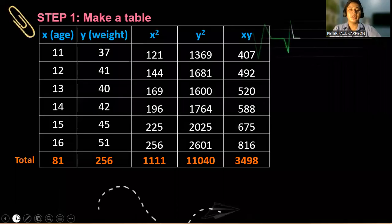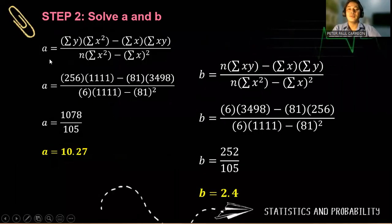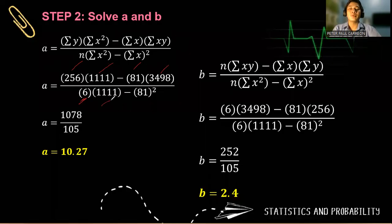After doing the table, then you can solve for a and b. So to solve for a, the summation of y is 256, the summation of x squared is 1111, minus the summation of x is 81. The summation of the product xy is 3498, times six which is the number of children, times 1111 minus the square of the summation of x, which is 81 squared. Using your scientific calculators, the answer will be this one. Simplifying the answer, our a is 10.27.